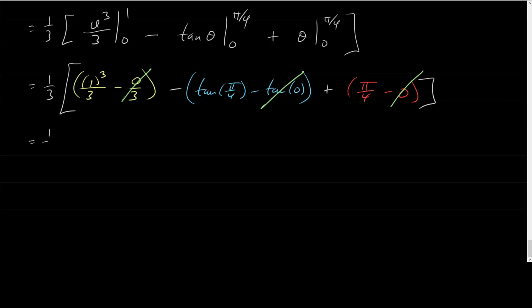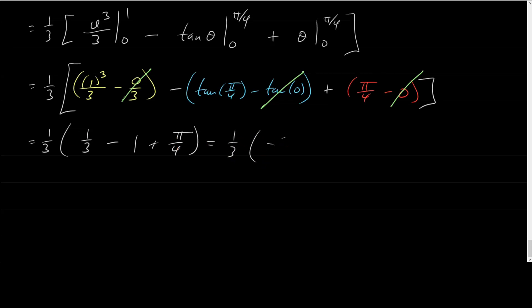Combining: one-third times (1/3 minus 1 plus π/4). Since 1/3 minus 1 equals negative 2/3, this gives one-third times (negative 2/3 plus π/4), which is the final answer.